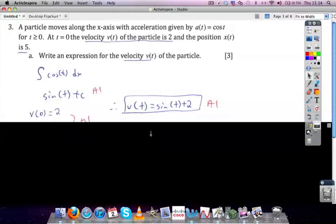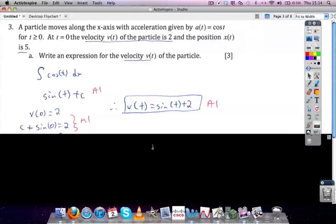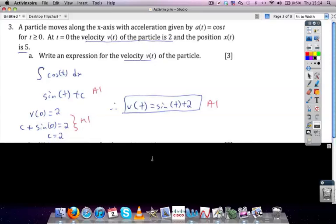Then we know that the initial velocity is 2, so we can plug that in and solve for c. So c plus sine of 0 is 2. We know that sine of 0 is 0, and so the constant of integration is 2. Therefore, the velocity function is sine of t plus 2.